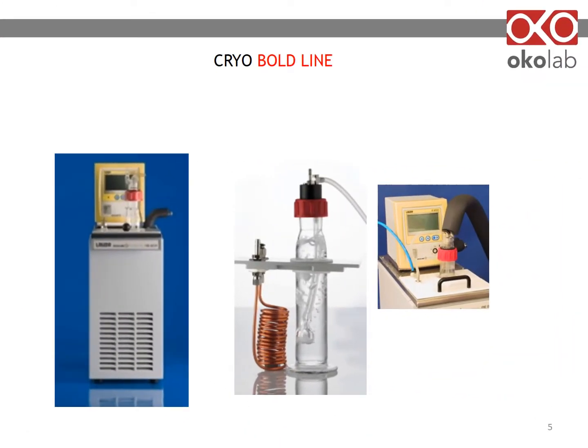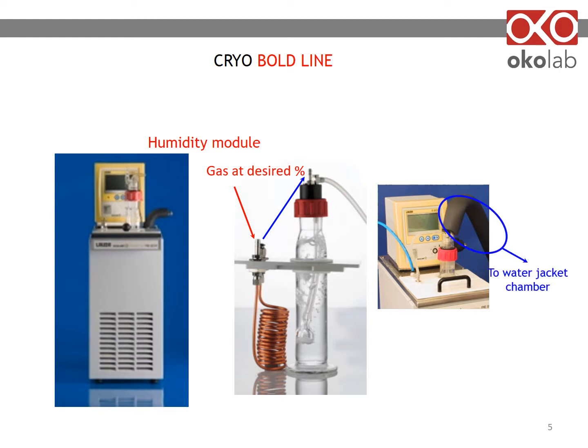A humidity module is housed inside the water bath as indicated. Gas of the desired concentration enters the water bath and runs through a coil, getting cooled or heated depending on your set point. It then flows through the humidity module where it gets humidified while maintaining temperature. Lastly, it reaches the water jacket chamber through an insulated tubing.